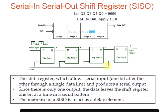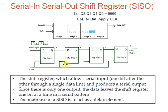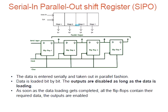The SISO shift register allows serial input — one bit of information after another — and produces a serial output. Since there is only one output, the data leaves the shift register one bit at a time in serial fashion. One application of this is as a delay element, and it can also be used as a temporary data storage device. The main application is in delay element applications.